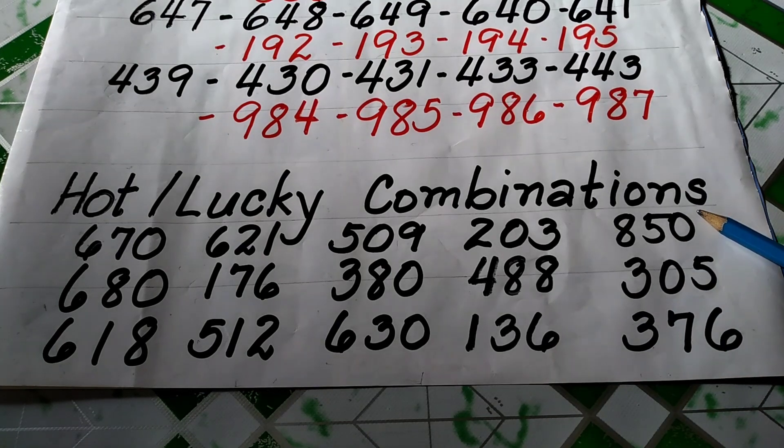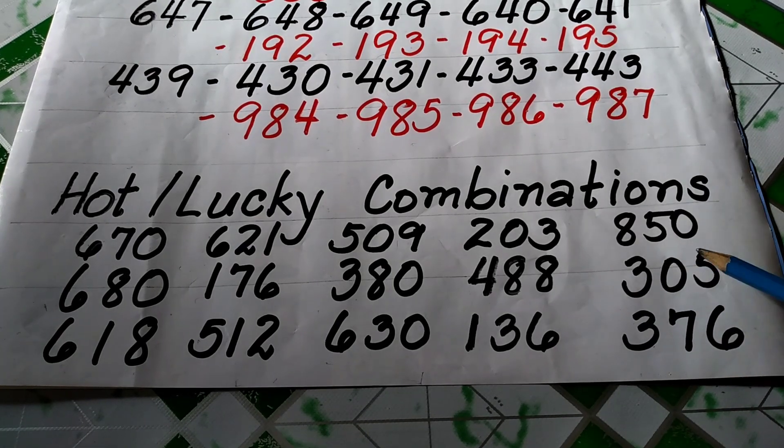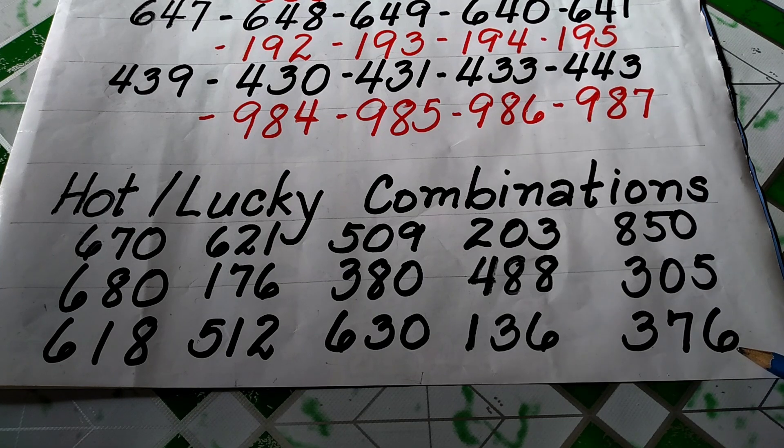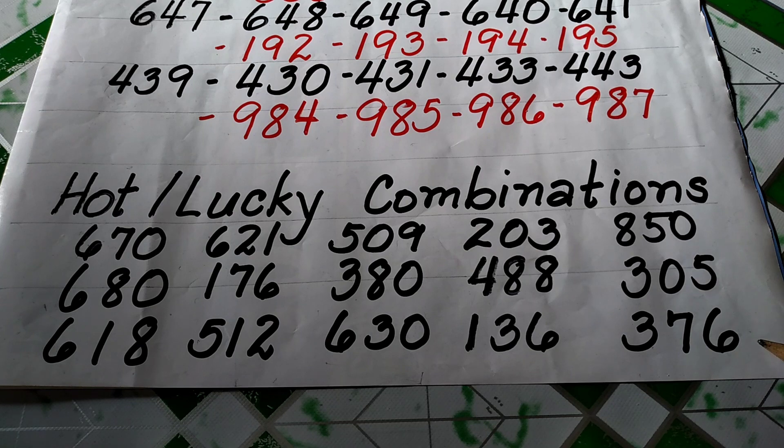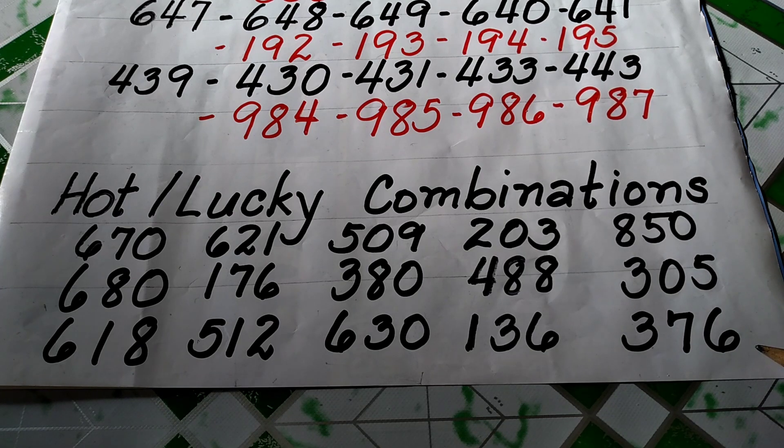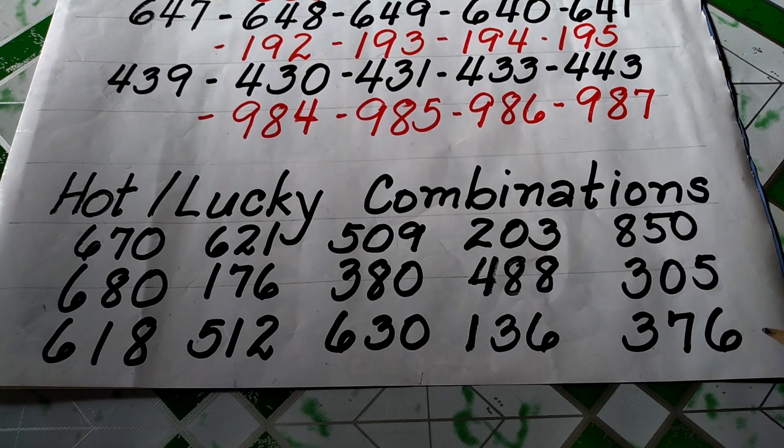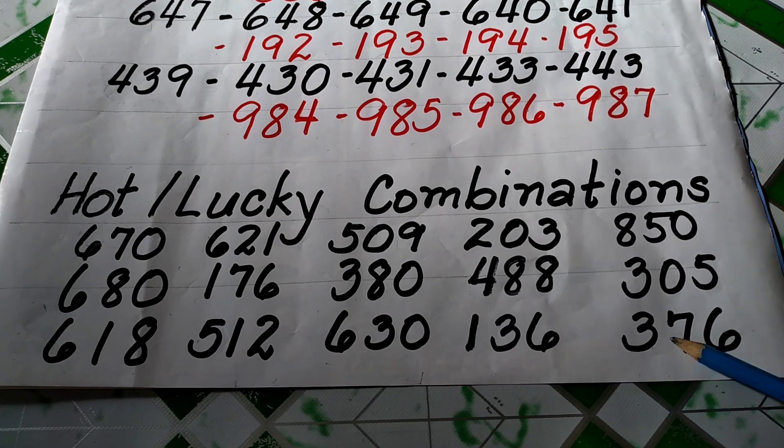Tapos, meron tayo, 8-5-0 dito, 3-0-5, 3-7-6. Lumabas yung 6-4-7. Ito yung slide kombinasyon ng 6-4-7, 6-3-7, 3-7-6.